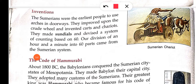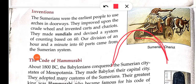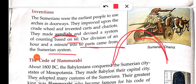Inventions — the Sumerians were the earliest people to use arches in doorways. They improved upon the crude wheel and made carts and chariots. They made the sundial — an important objective question topic. They also devised a system of counting based on 60. Our division of an hour and minute into 60 parts comes from the Sumerian system.